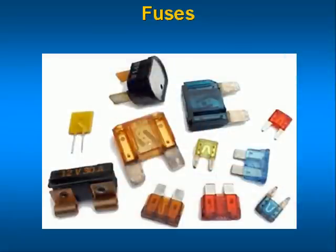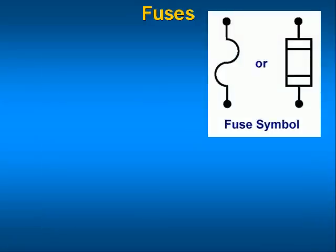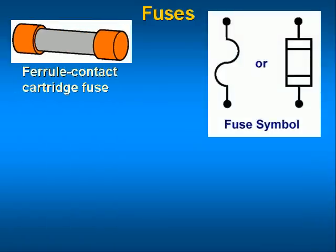The fuse is one of the most common circuit protection devices in use. It must be replaced after a circuit protection event takes place because the fuse destroys itself. There are many types of fuses designed for various voltages and currents.